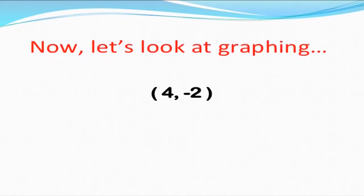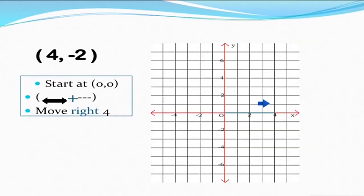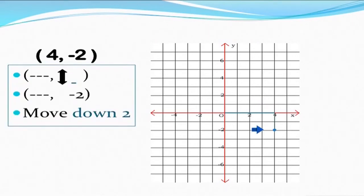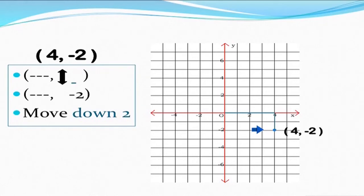Now let us look at graphing (4, -2). 4 is to the right as it is positive on the horizontal axis, and -2 means we move down from the origin by two points. The lines intersecting from 4 and -2 horizontally and vertically will intersect at the point represented by (4, -2).